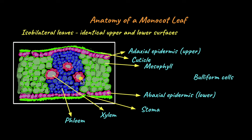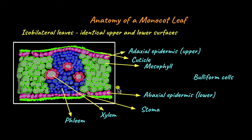When the plant has enough water, the buliform cells will swell up, causing the upper surface to be exposed to the environment. Even if transpiration occurs, it's okay because the plant has enough water. When the plant doesn't have enough water, the buliform cells will shrink, causing the leaves to curl up inwards. This will not expose the adaxial surface to the environment — only the abaxial surface might be exposed. With the curling up of the adaxial surface, water loss can be reduced.